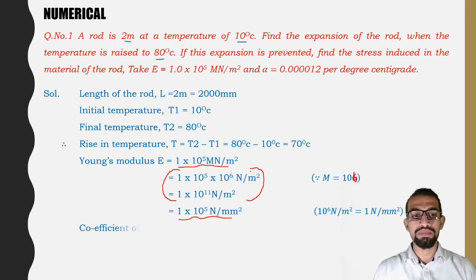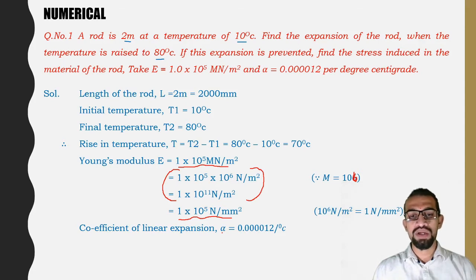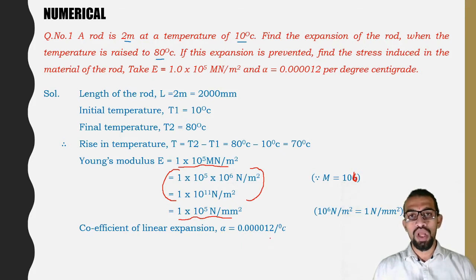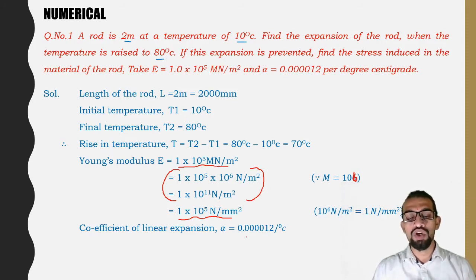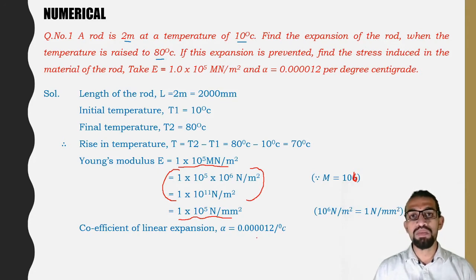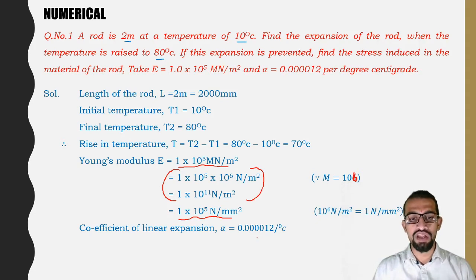Coefficient of linear (thermal) expansion alpha = 0.000012 per degree centigrade — this is the expansion happening for 1 degree of temperature change.